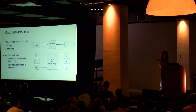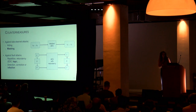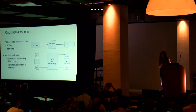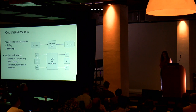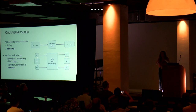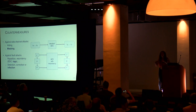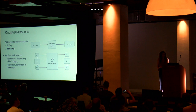Once you figure out how to implement your cryptographic calculation with redundancy, you also have to decide what to do with it. You could decide to detect faults, or you could try to correct them, or you could go for infection — which means that as soon as something is faulted in the computation, you want to make sure that the output is completely random, so that an adversary cannot get any information from that.